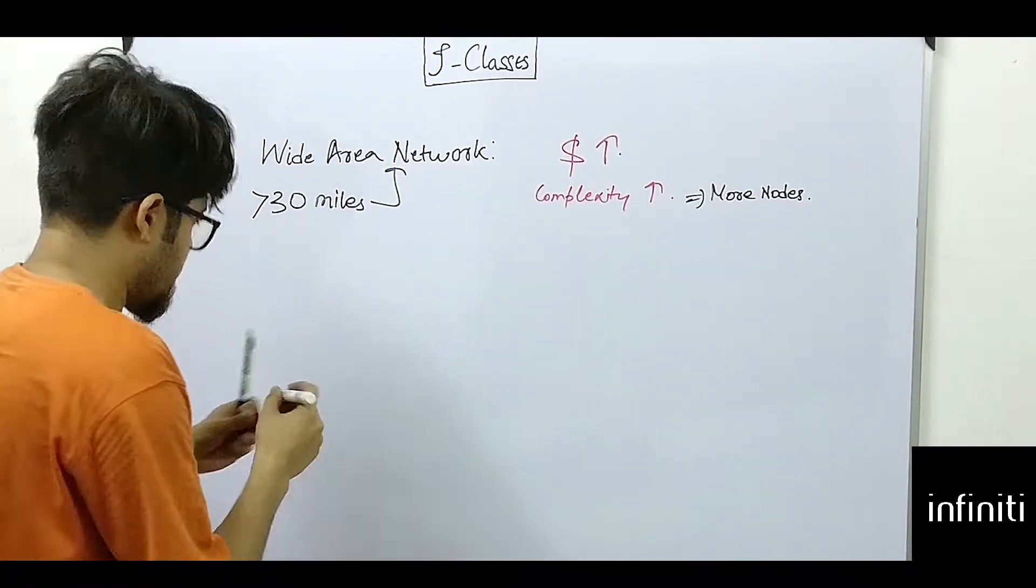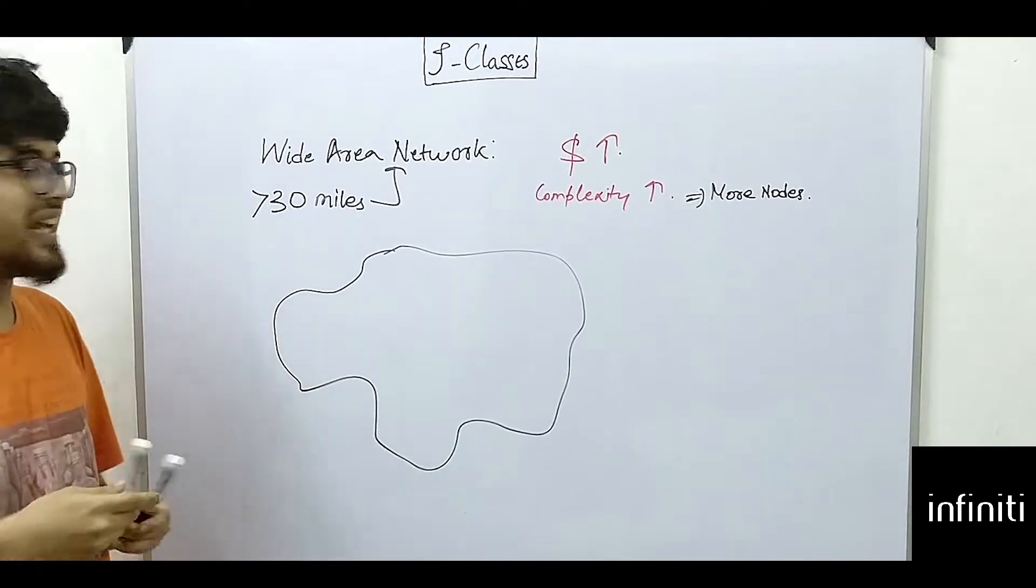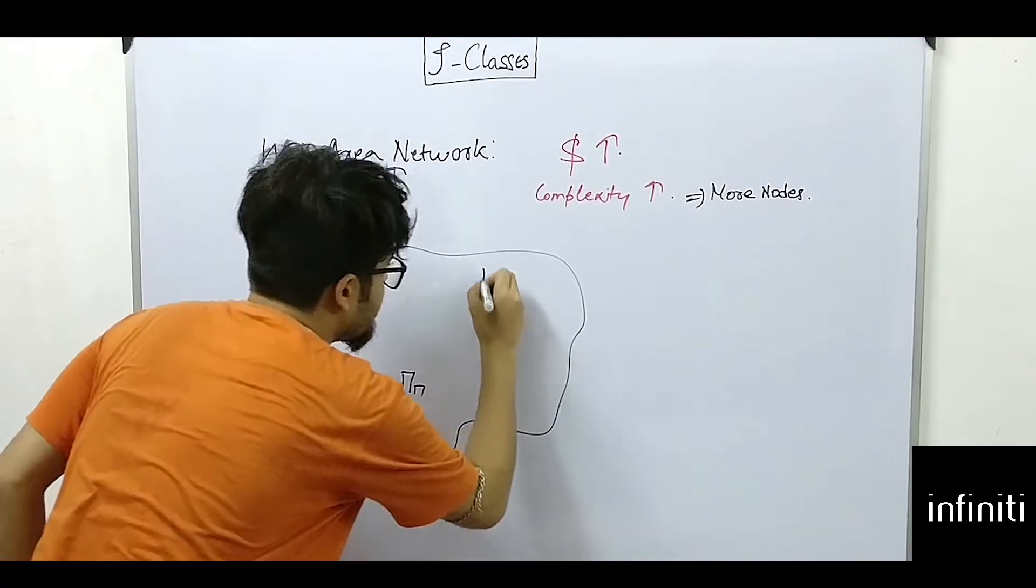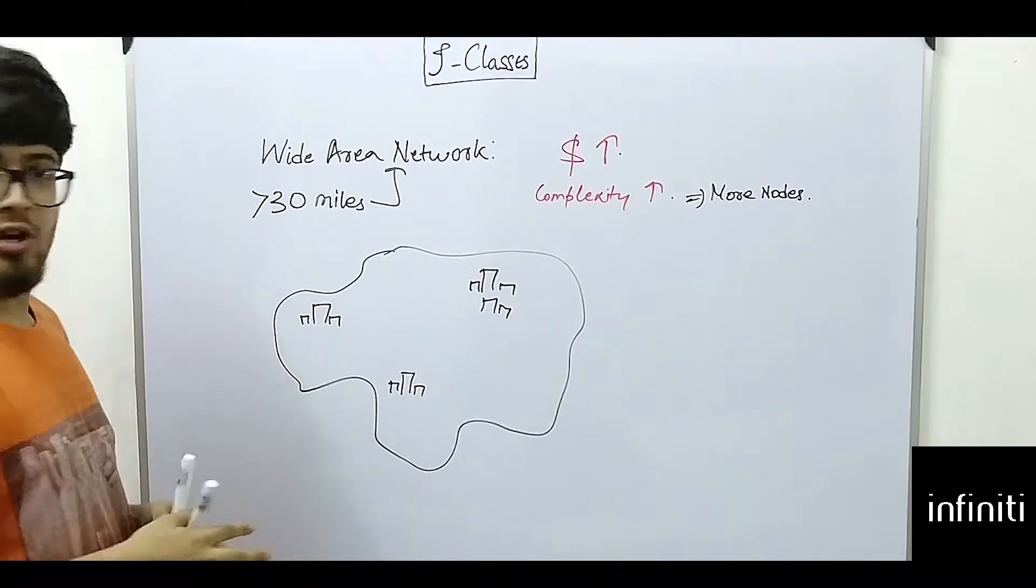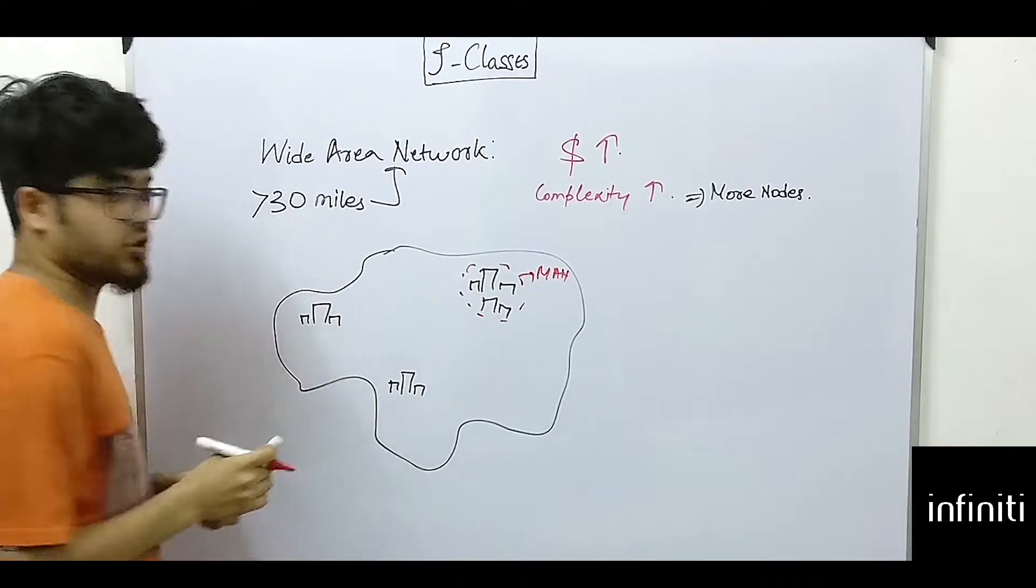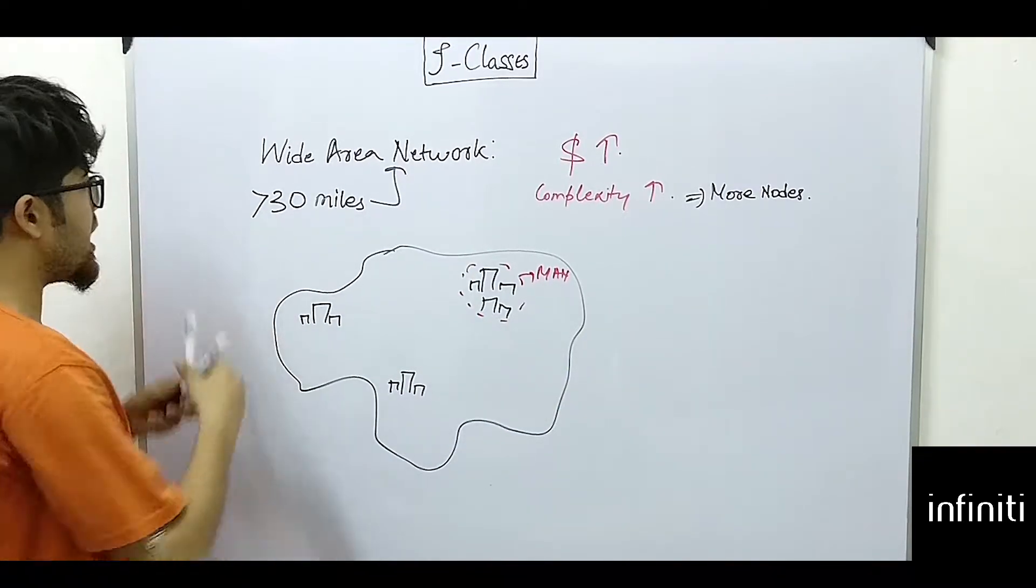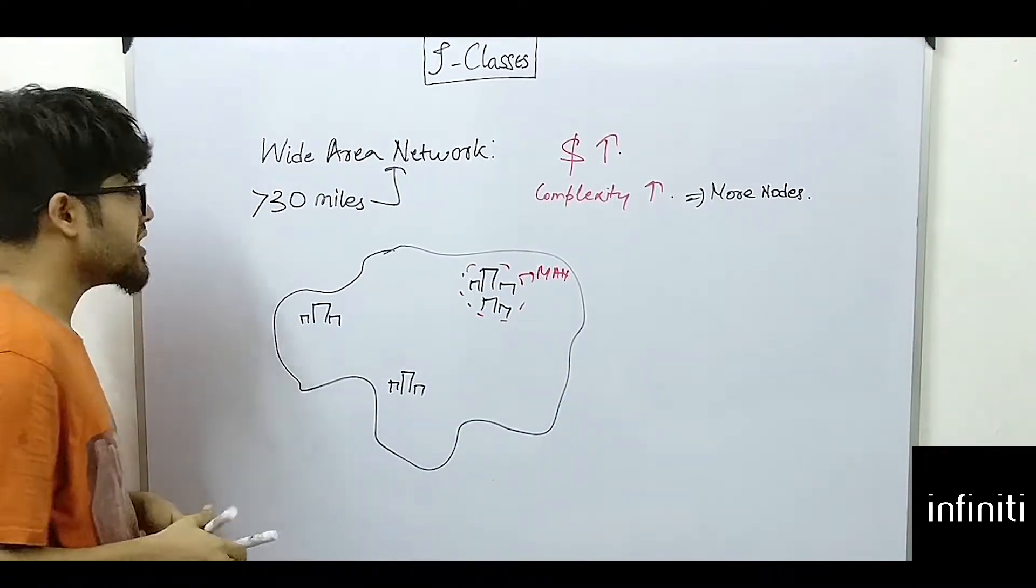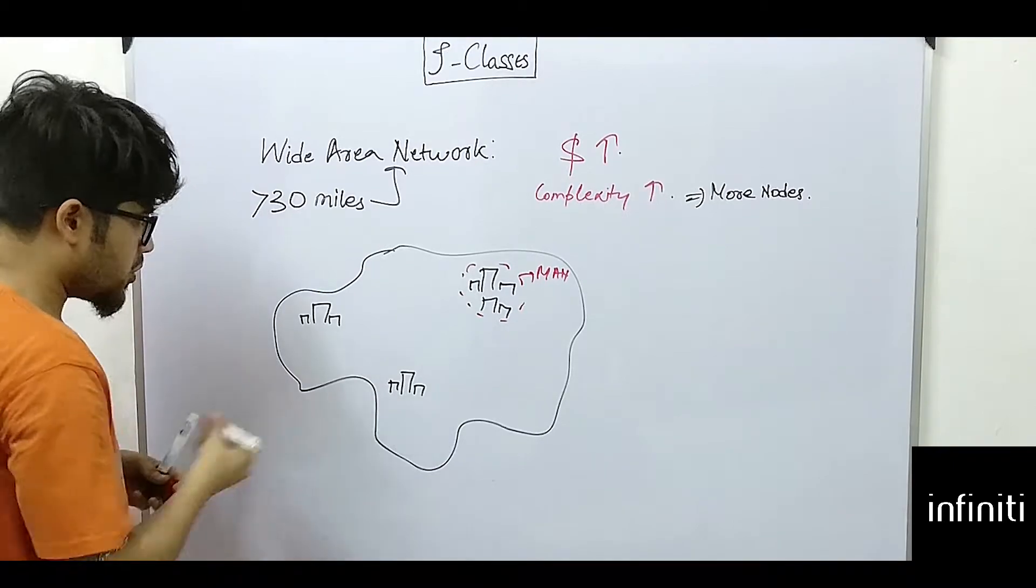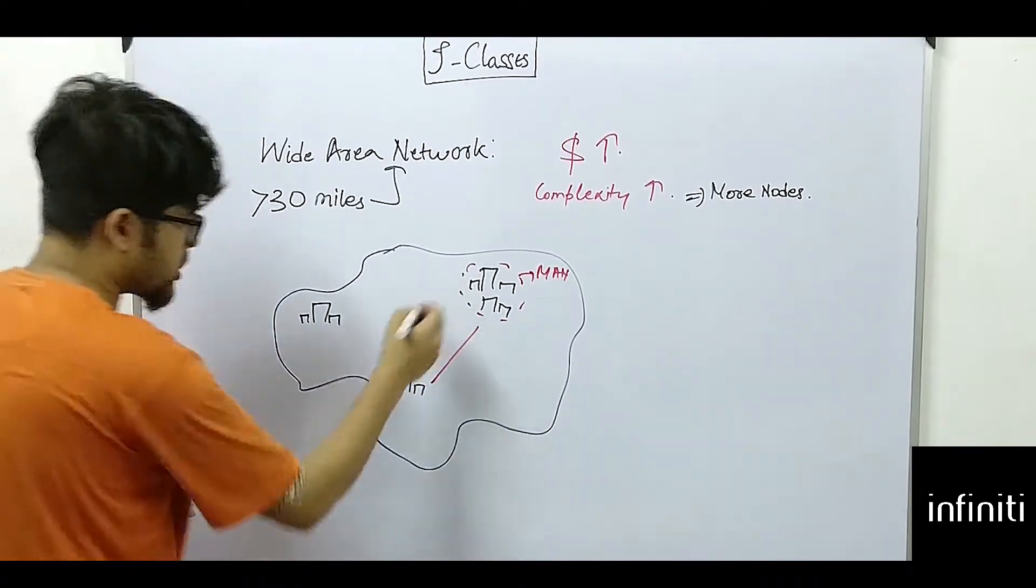So wide area network is the network which is connected over a region that is greater than a city. So let me draw a particular area. Suppose this is a map of a place like Malvori. These are different cities. Some may be bigger cities, some may be smaller cities. So these individuals form MAN. These individual cities form metropolitan area network, but all together combined is what we call as wide area network. Now how are they combined? For that we know we require some medias that may be wireless media, that may be wired media.